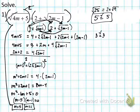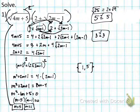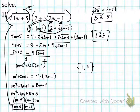So these are both valid solutions. I can write the answer as m = 5 or m = 1, or in set notation {1, 5}. They're both the same. That's number one — took a long time!